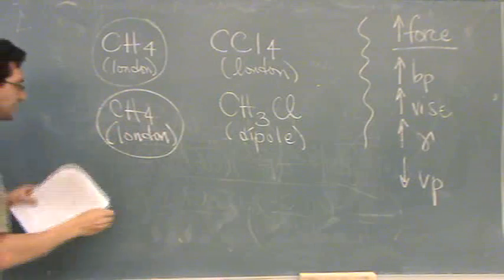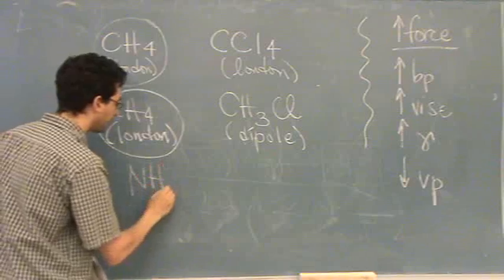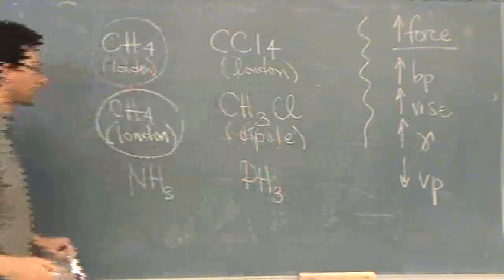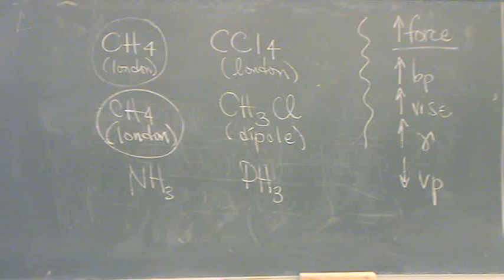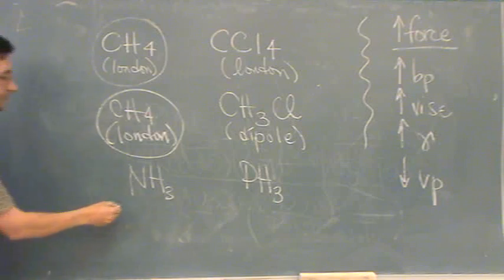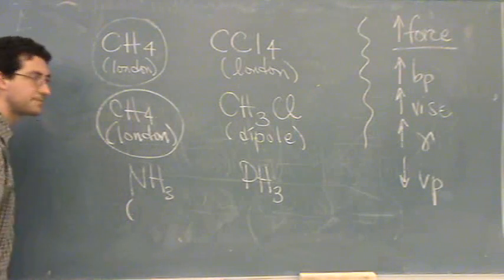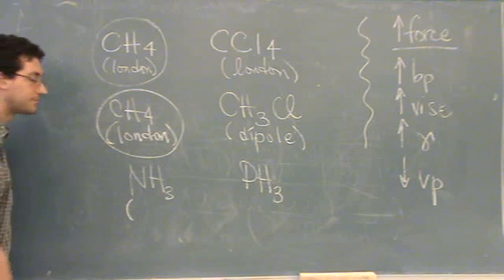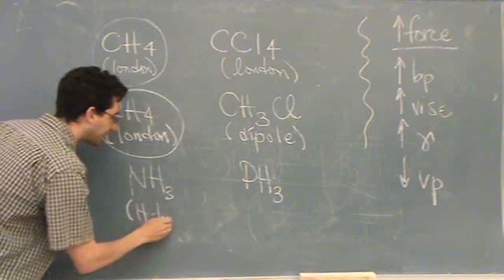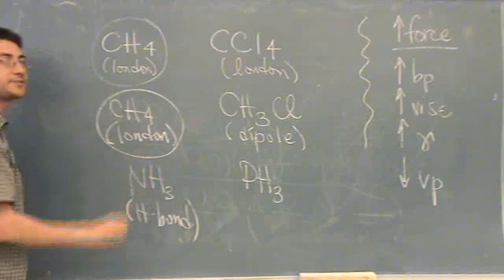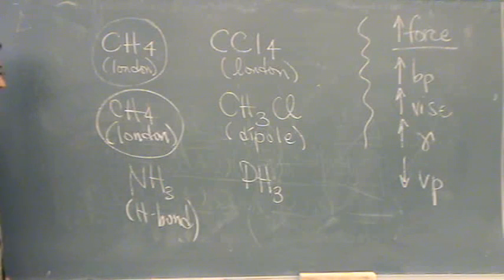And then the third one is NH3 and PH3. In this case, what are they? What's the first one? What kind of force? Hydrogen. H-bond. There's a hydrogen on a nitrogen, which is an electronegative element. That one's very strong.